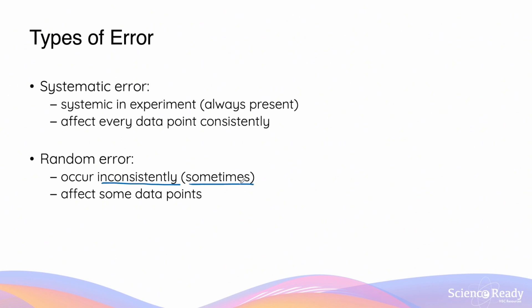Random errors, on the other hand, occur randomly or inconsistently. They are only present sometimes and only affect some data points. For some repetitions of the experiment you may not see the random error, and then on repeating it you might find that it is affecting the accuracy of your data points. I'll go through systematic and random errors in more detail using examples.